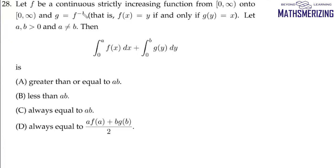Question 28: Let f be a continuous strictly increasing function from [0, ∞) onto [0, ∞), and g be the inverse of f. If a and b are greater than 0 and a is not equal to b, then